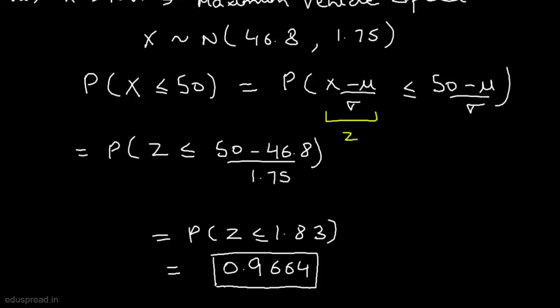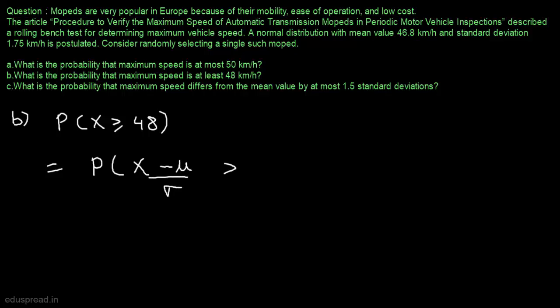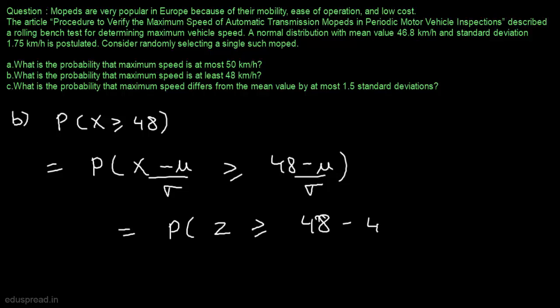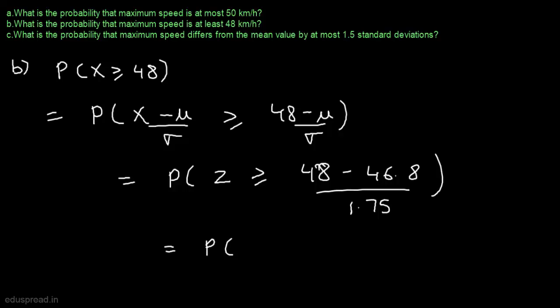Now let's move to part B. In part B, we have to find the probability that maximum speed is at least 48 km per hour, meaning we have to find the probability that x is greater than or equal to 48. This is equivalent to finding the probability that (x minus mu) divided by sigma is greater than or equal to (48 minus mu) divided by sigma. So this equals the probability that z is greater than or equal to (48 minus 46.8) divided by 1.75, which gives z greater than or equal to 0.69.